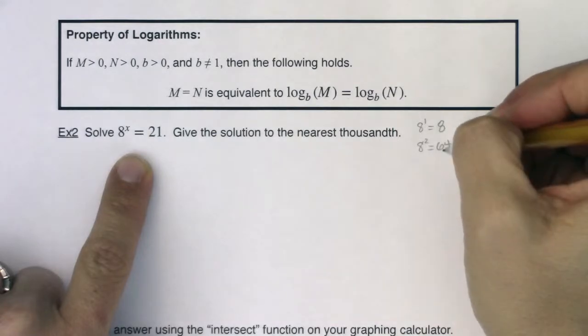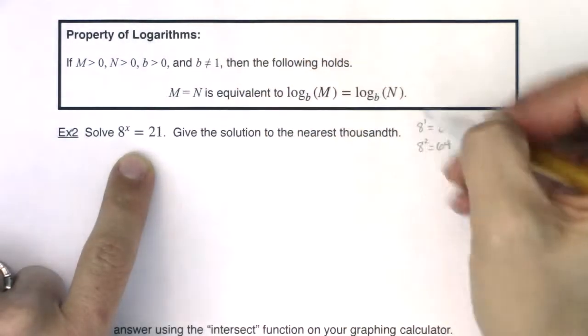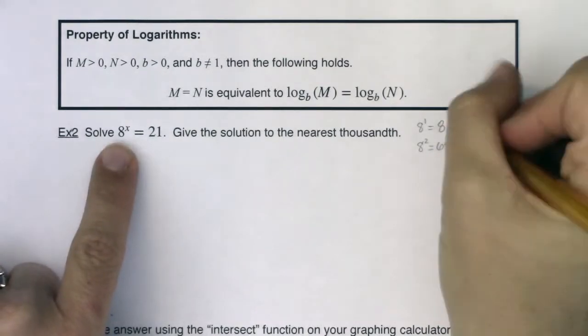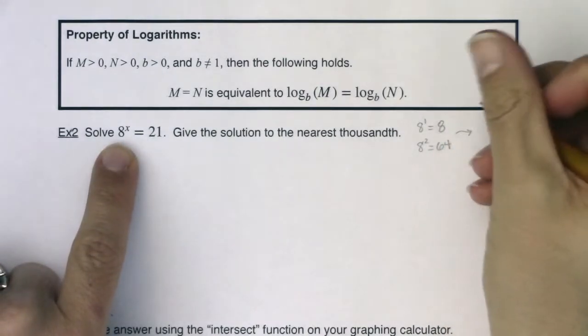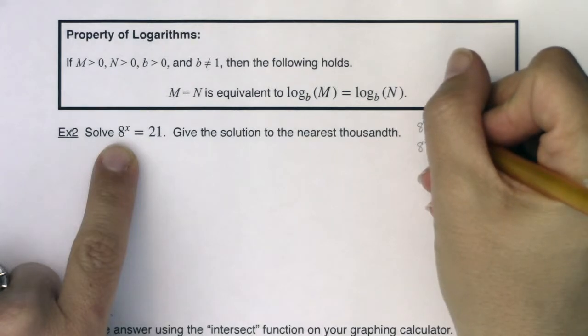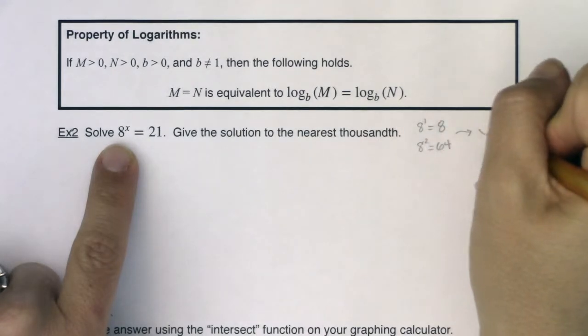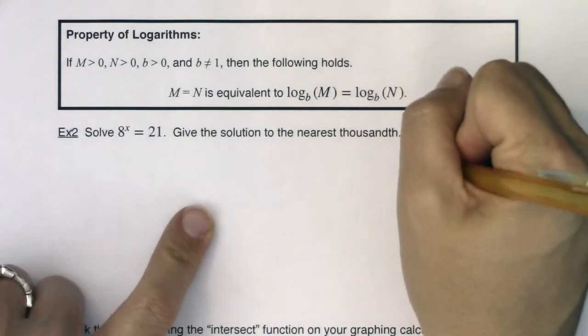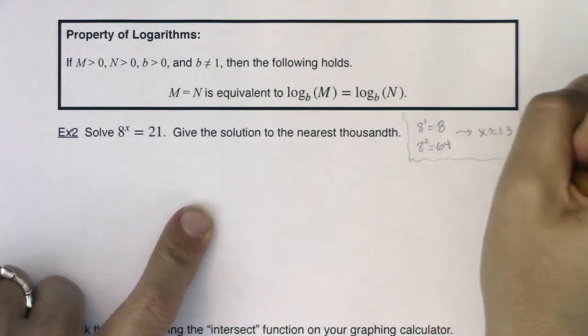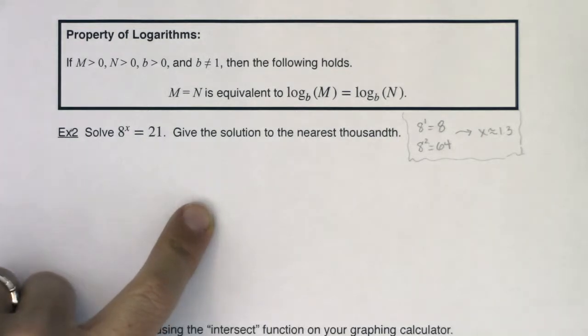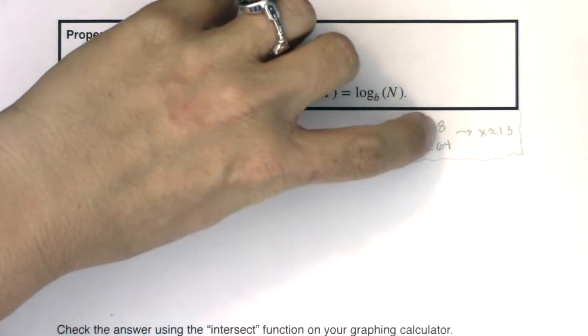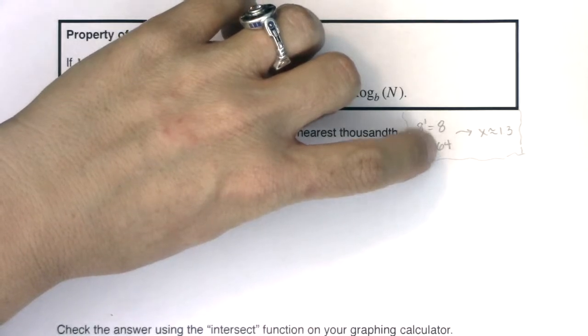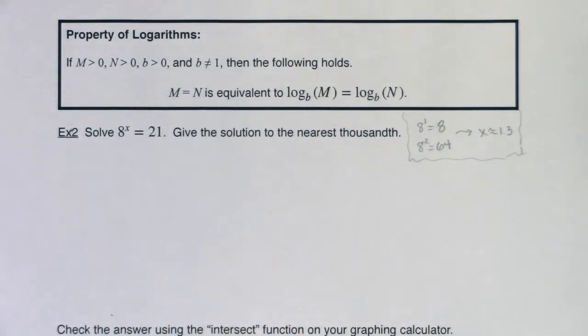If I know 8^x is 21, and I've got an 8 and a 64 here, well, 21 is much closer to 8 than it is to 64. So I have a feeling my x value is going to be closer to 1 than it is to 2. So my guess, I'm just going to guess here for my gut feelings, I'm going to say x, I think it's somewhere around 1.3. If I had to guess, because 21 is a little bit far away from 8, but it's definitely not as far away from 8 as it is from 64. So I'm going to say about 1.3.